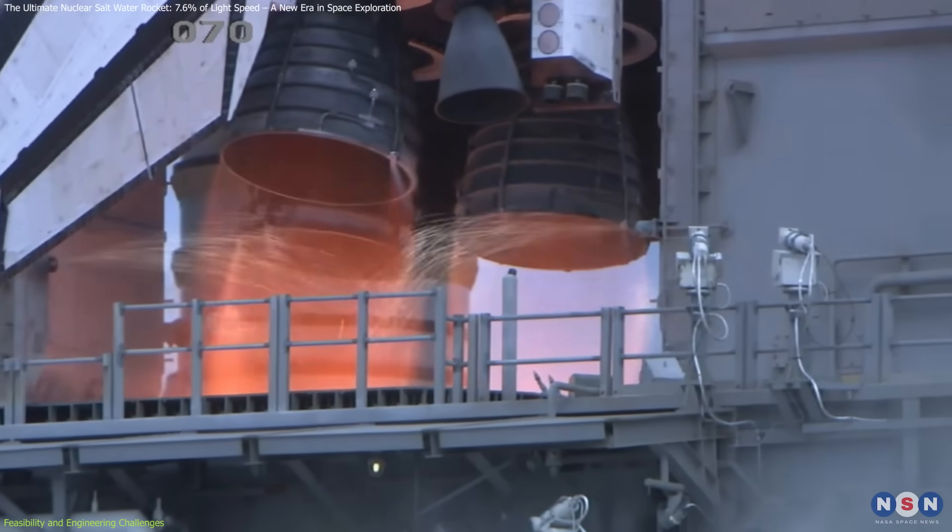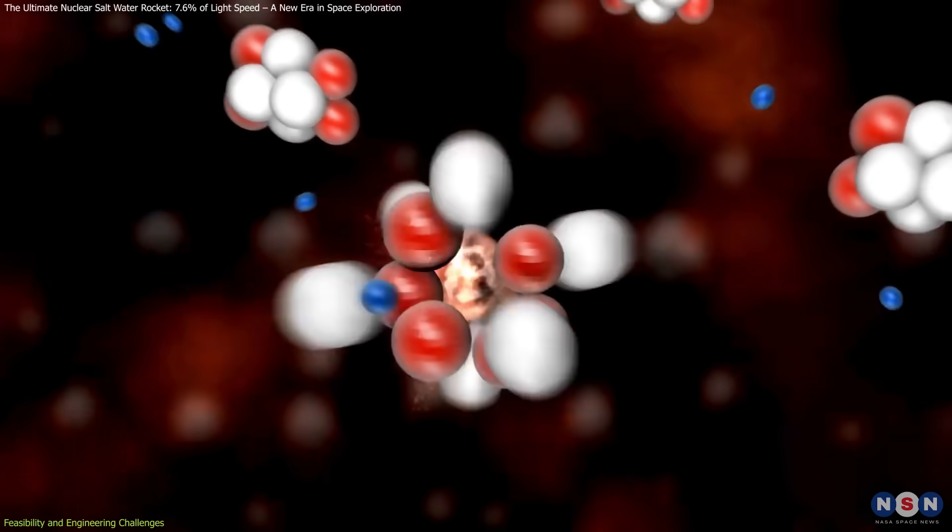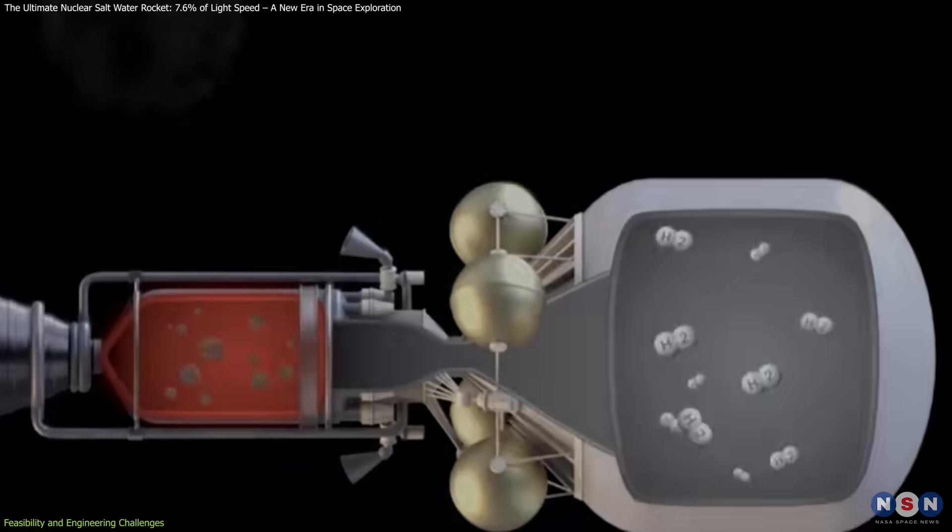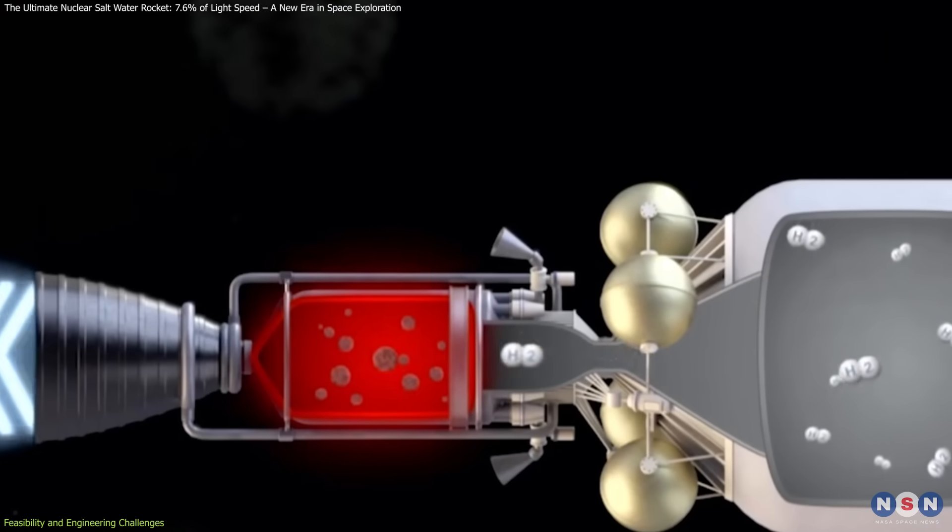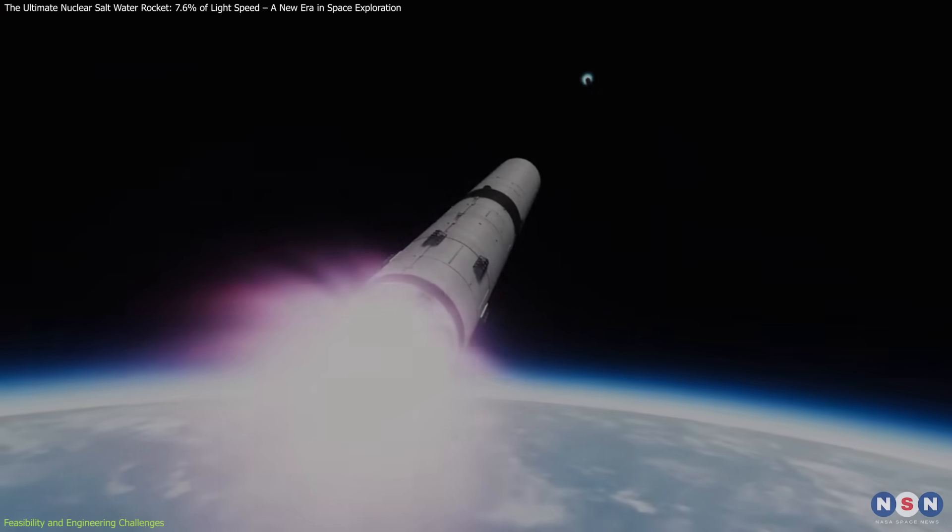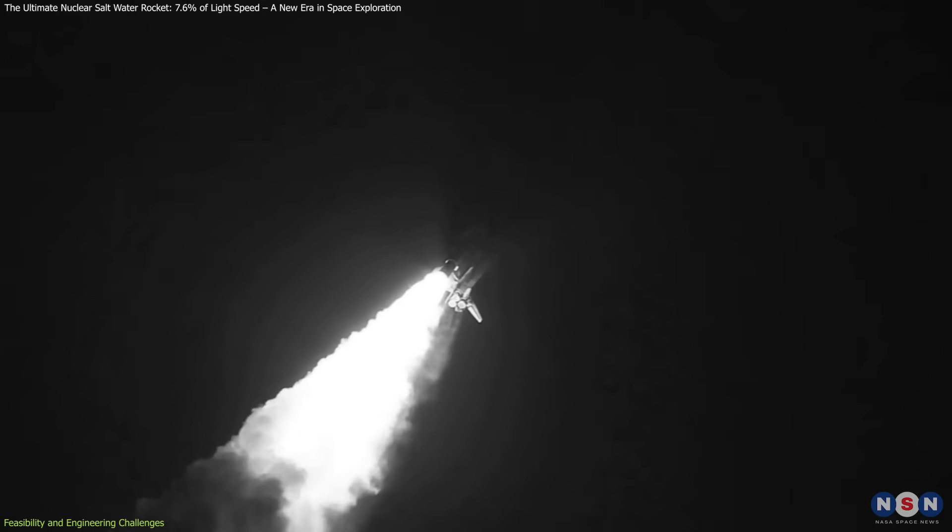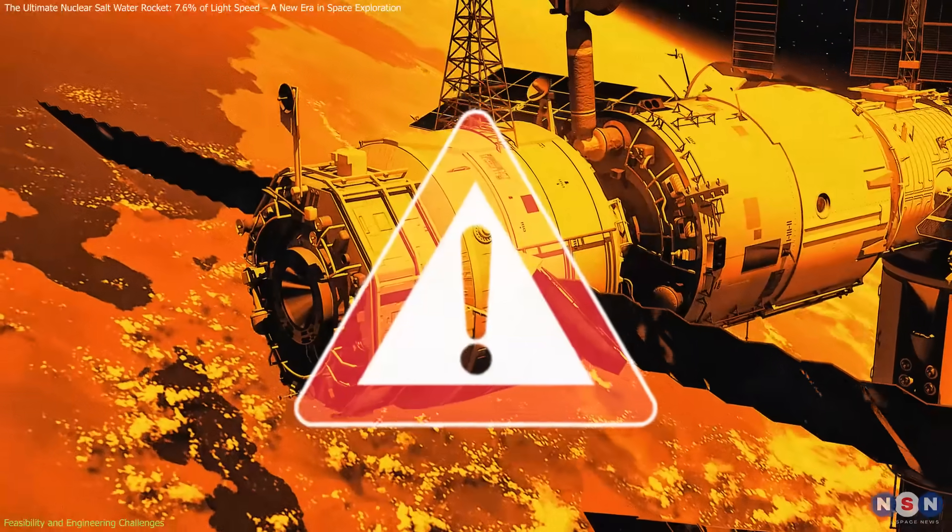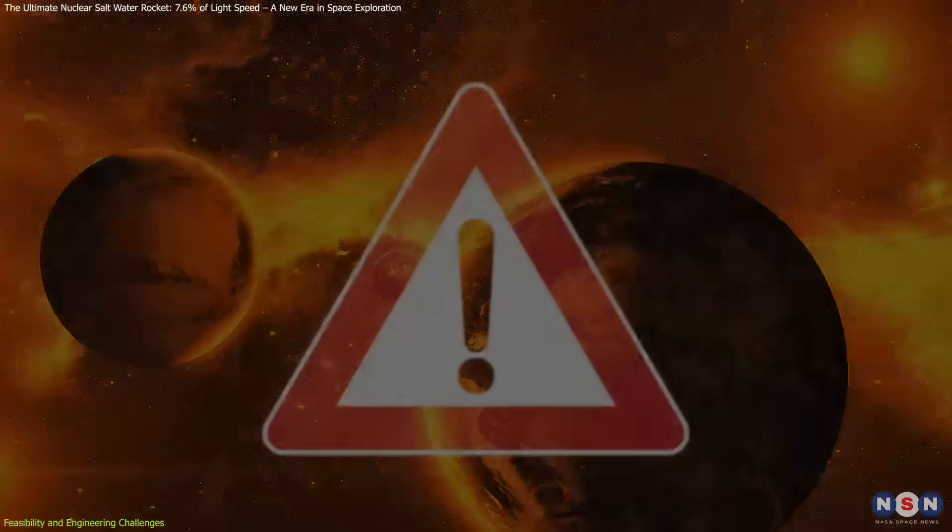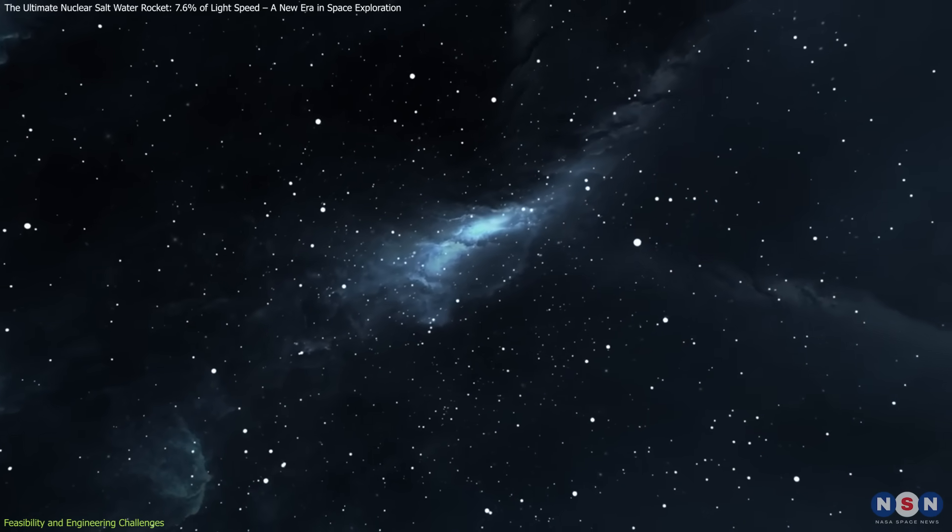Another critical challenge is radioactive exhaust. Unlike conventional nuclear rockets, where radioactive materials remain inside a reactor, this rocket ejects highly radioactive plasma directly into space. This makes using it anywhere near Earth or in orbit completely impractical, as the expelled material could pose a severe threat to surrounding spacecraft, satellites, or planetary environments. This rocket could only be deployed far from human presence, likely in deep space.